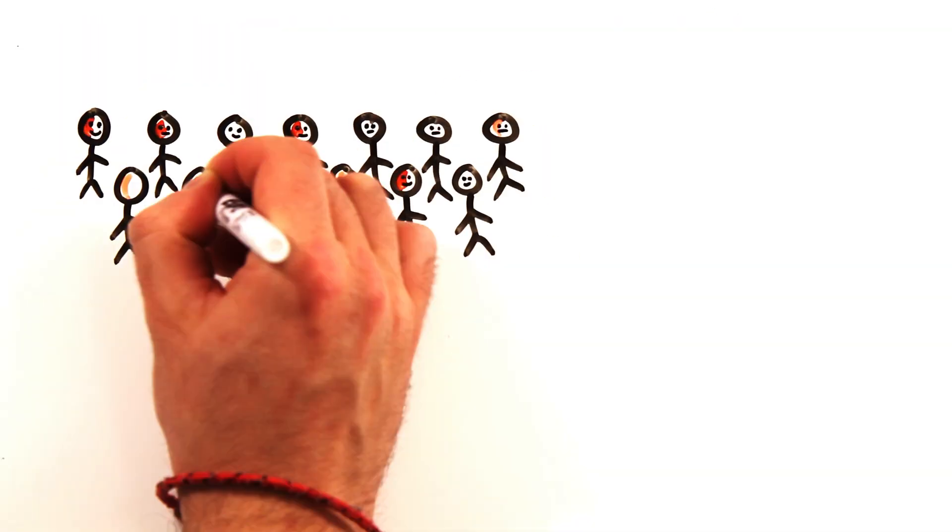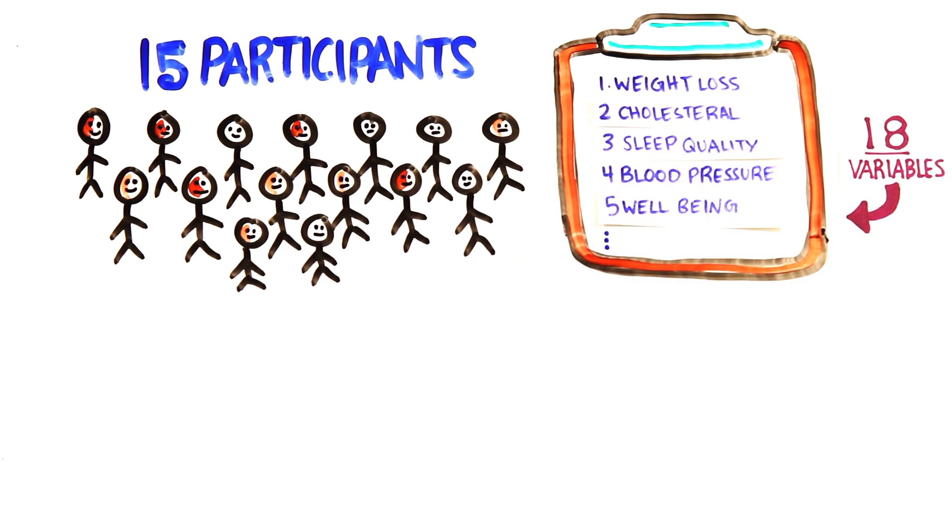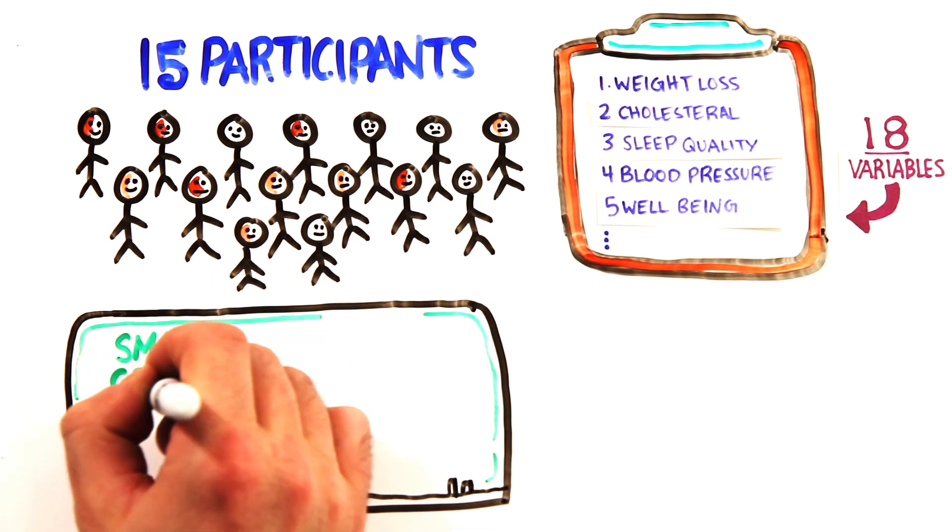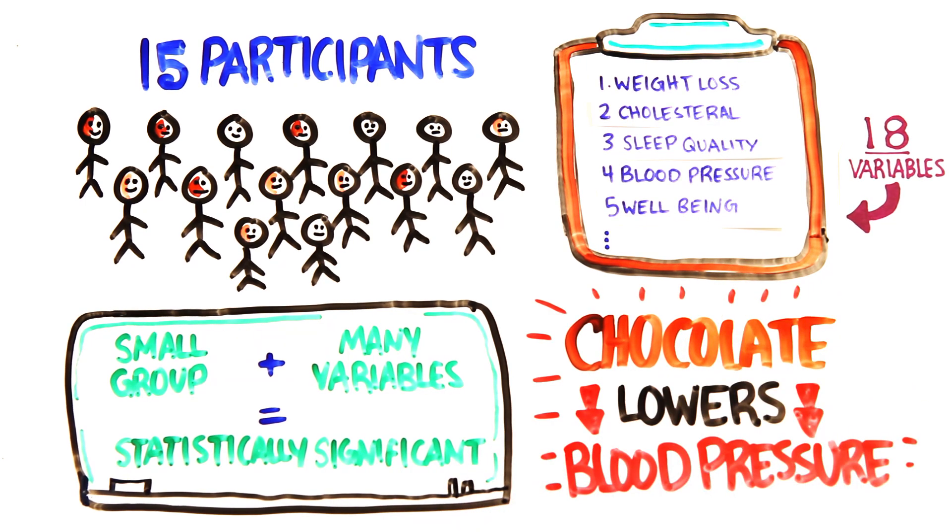He used 15 participants and measured 18 different measurements including weight loss, cholesterol, sleep quality, blood pressure, well-being, etc. And when you use a small group of people and measure a large number of things, you're pretty much guaranteed to get a statistically significant result, which Veritasium has an amazing video on if you want to check out. The result could have easily been something different, such as chocolate correlates to lower blood pressure.